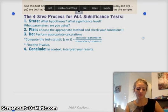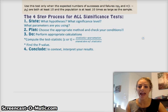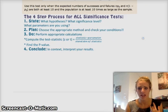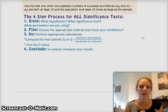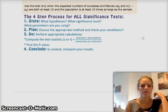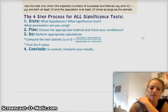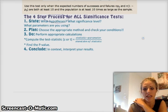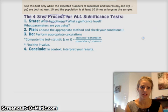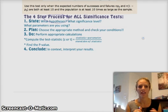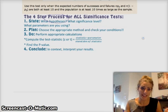Here's your four-step process for any significance test, not just for proportions. You're always going to state your hypothesis, the significance level, the parameters that you're using. Planning is choose your appropriate method. So, are you doing a Z test? Are you doing a T test? Is it a one-sided, a two-sided? Is it for proportions? Is it for means? You want to state that ahead of time.